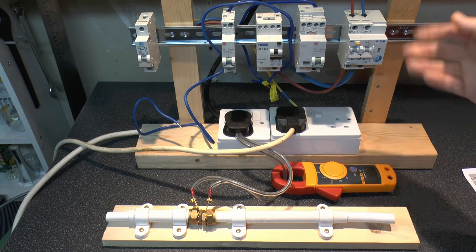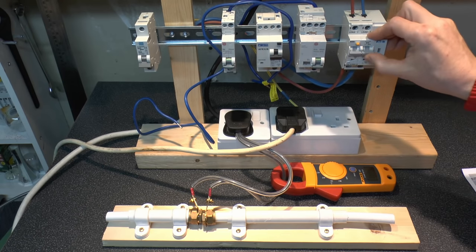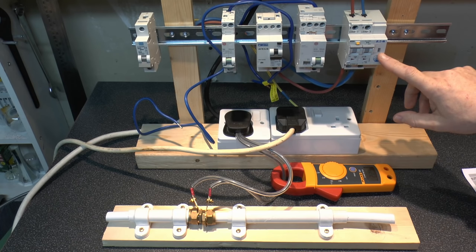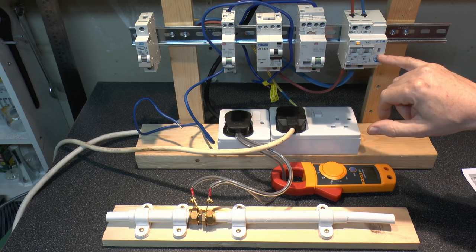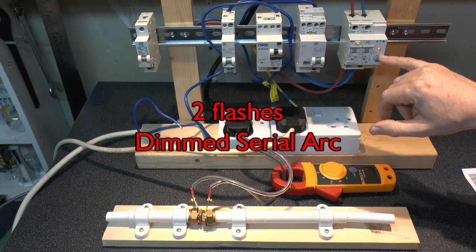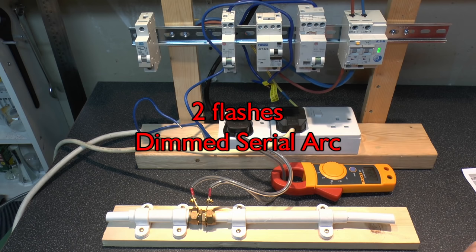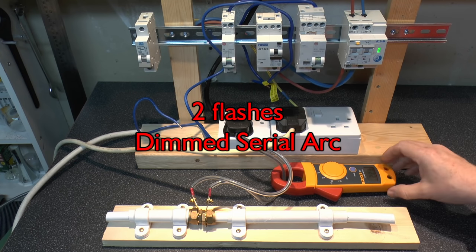Okay so there we go, that has tripped. So if we close the contacts there, turn it on, and we'll see we've got two yellow flashes there to indicate the type of fault which we had. And then it goes back to green for normal operation. So that's with 2.2A there.